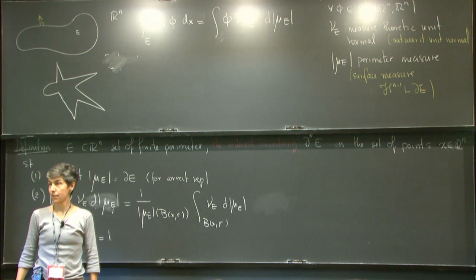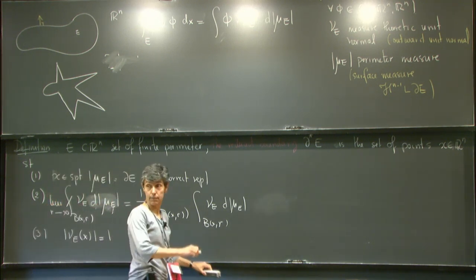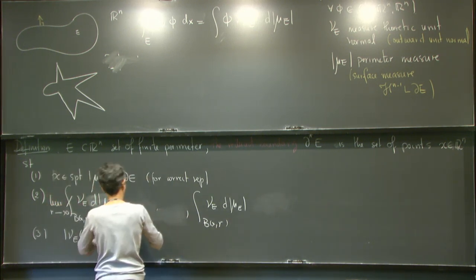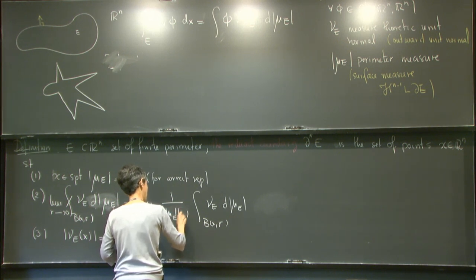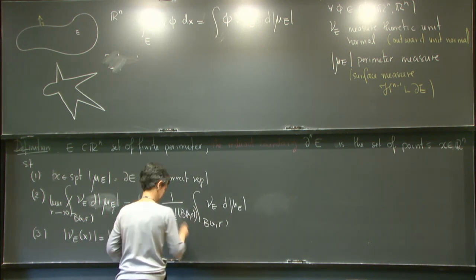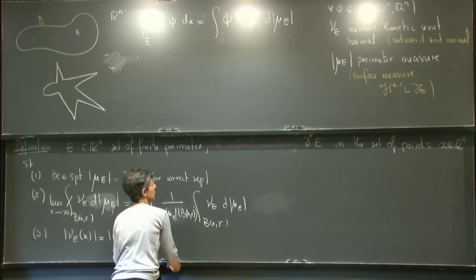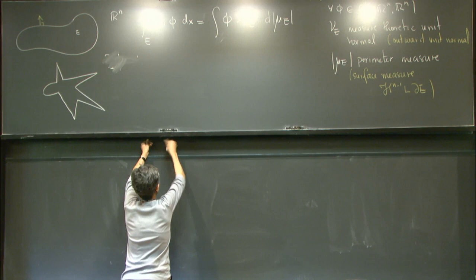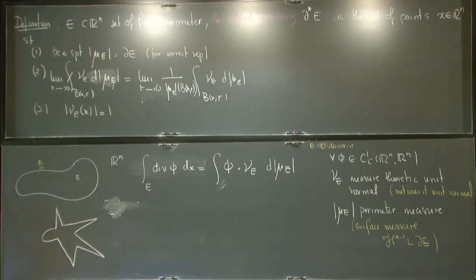The homework: think about what the set looks like if, for r small enough, the average converges exactly. The limit as r → 0 of (1/μ_E(B(x,r))) times the integral of ν_E dμ_E over B(x,r) equals ν_E(x), and we only care about points where |ν_E| = 1. This tells us the reduced boundary is inside the topological boundary.